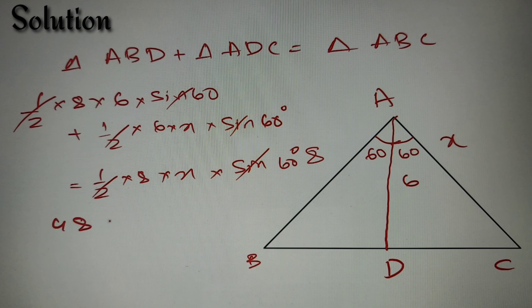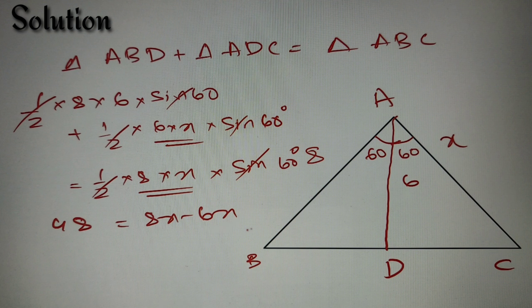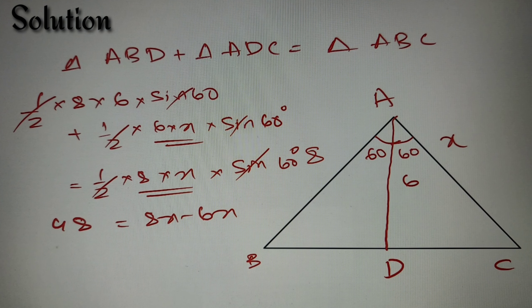So we'll basically get that 48 is equal to 8X minus 6X, because here we'll have 6X and here we'll have 8X, and 6X going over there becomes minus 6X. So we have got that 48 is equal to 2X, or the value of X is equal to simply 24.